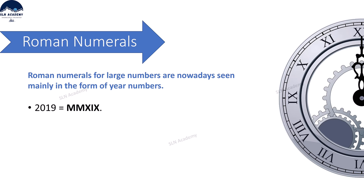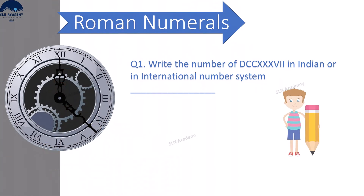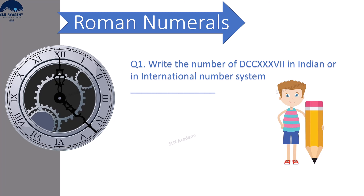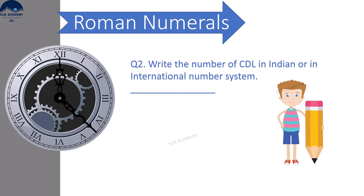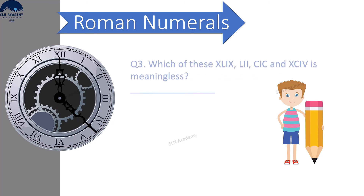Now let us move to our favorite session — question time! Question 1: Write the number of DCCXXXII in the Indian or international number system. Question 2: Write the number of CDL in the Indian or international number system. Which of these Roman numerals is meaningless? Option 1: XLIX. Option 2: LII. Option 3: CIC. Option 4: XCIV. Write your answers in the comment section given below and you can be the winner of the episode.